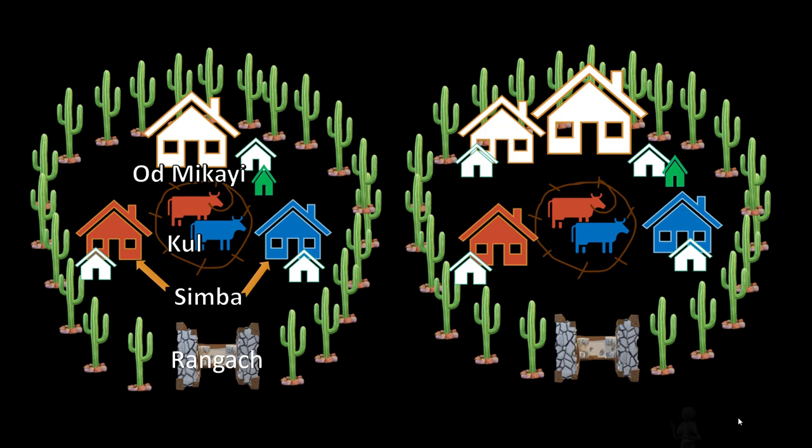To break down a Luo homestead: the first thing you'd see upon entering the gate — called Rangach — is the main house of the first wife, also called Odmikai. In the middle is the Kul, where the cattle were kept. To the right of the main house is the Simba for the first born son, to the left is the Simba for the second born son, and the third born son would also build to the right.